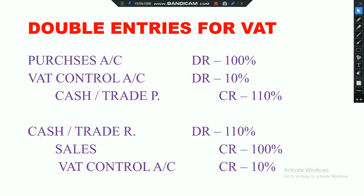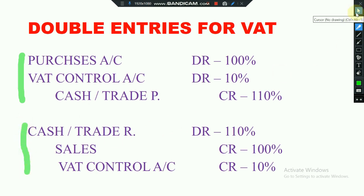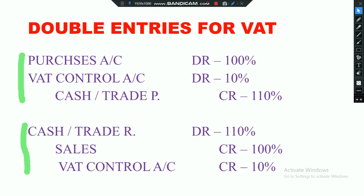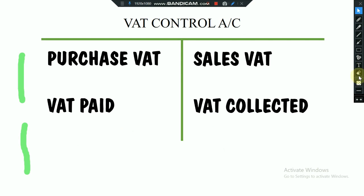When we analyze VAT, we have to focus on double entries for purchase and sales VAT. For purchases: debit Purchases 100%, debit VAT Control Account 10%, credit Cash or Trade Payables 110%. For sales: credit Sales 100%, credit VAT Control Account 10%, debit Cash or Trade Receivables 110%. So 100% means without VAT, 10% means VAT, and 110% means with VAT.